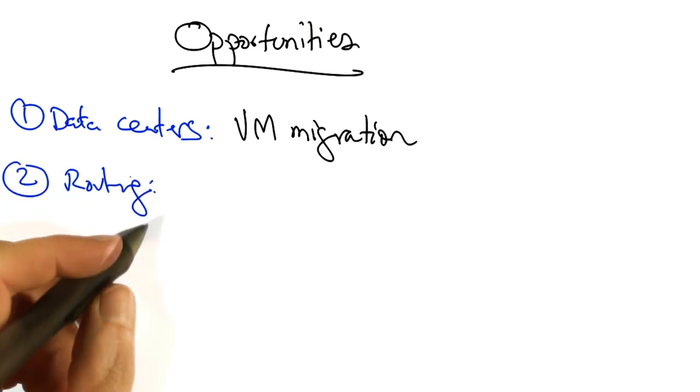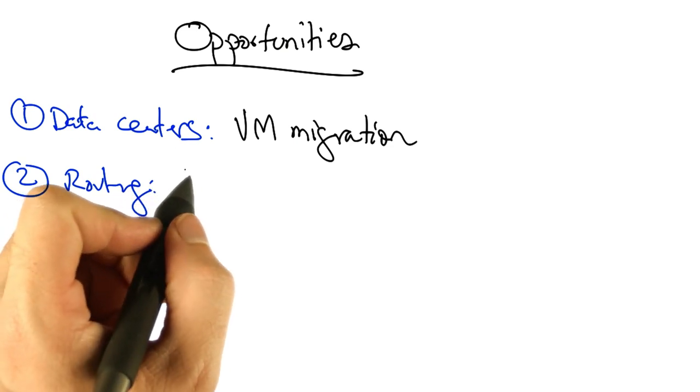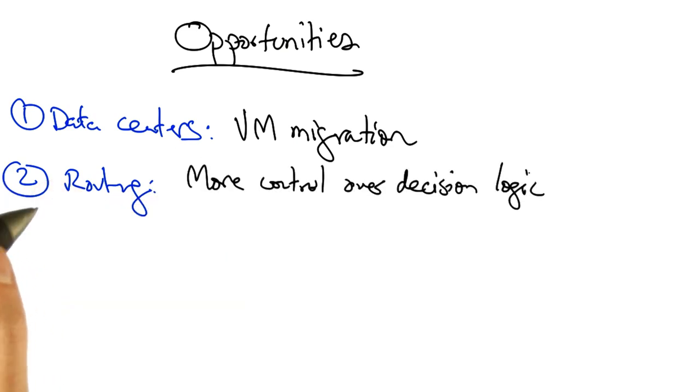In routing, the separation of data and control provides more control over decision logic.